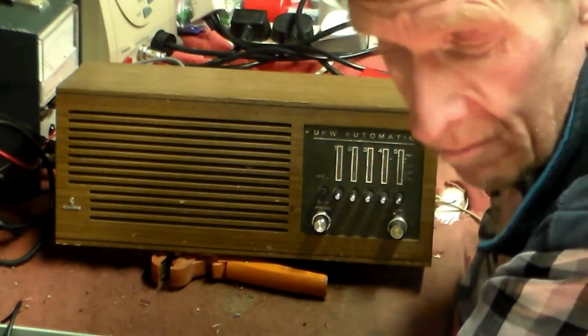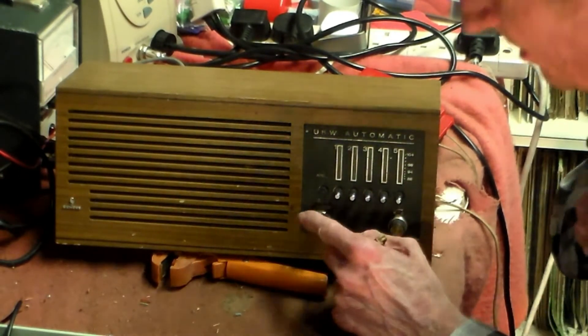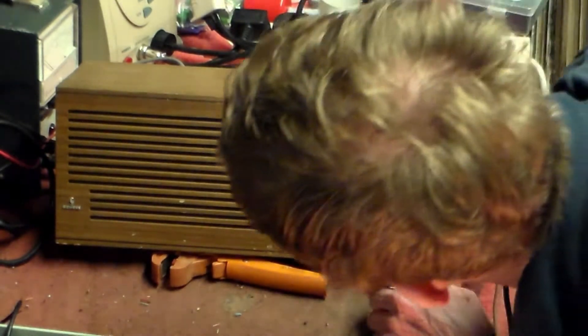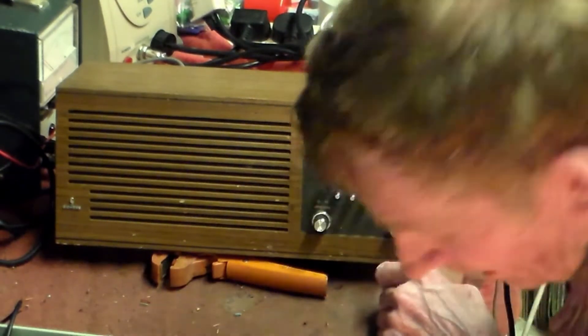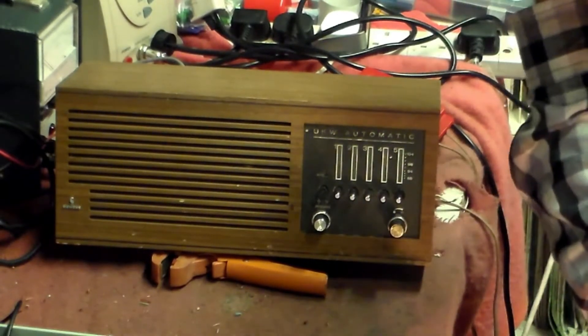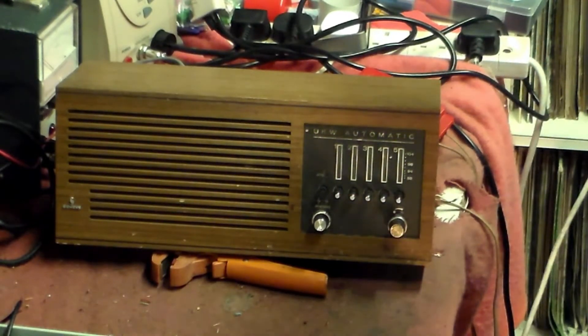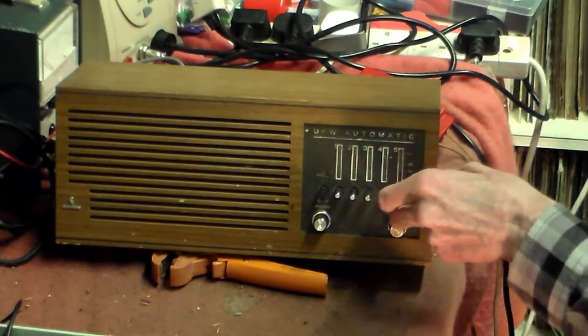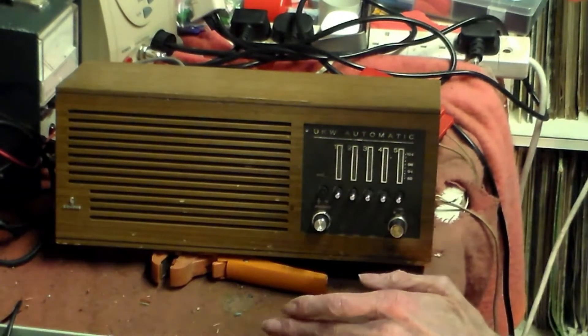In Germany they kept on with this though and brought out a set like this. This is a Siemens set, UKW automatic, VHF normally, with five tuners on the front here. It can be set to five stations, so it works in the same kind of way.